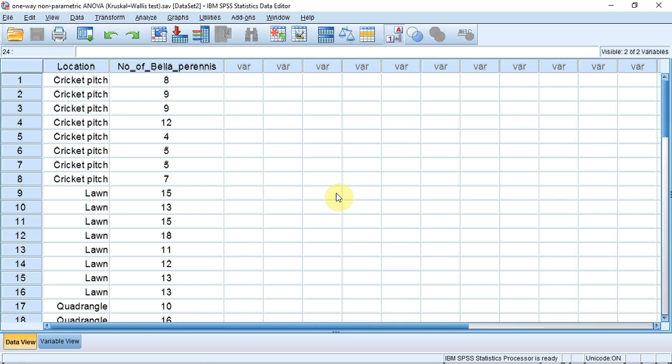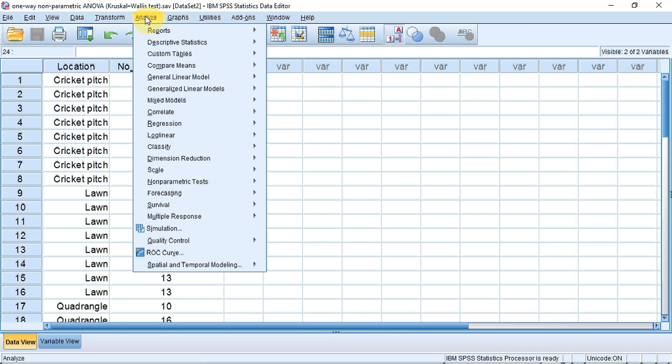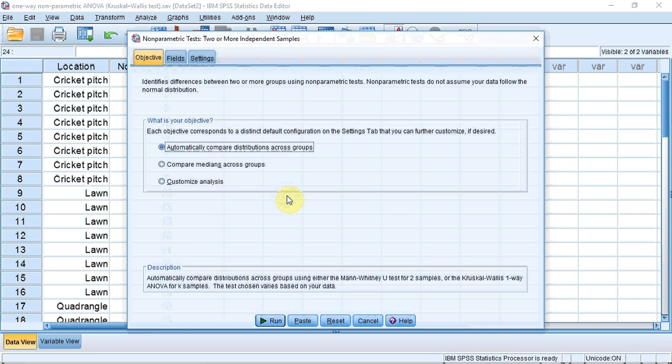To do the non-parametric one-way ANOVA, we go up to Analyze and click. A sub menu drops down. It's a non-parametric test, so we go down to Non-parametric Tests. It has four independent samples, so we go to the sub menu and click Independent Samples, and the following window opens.